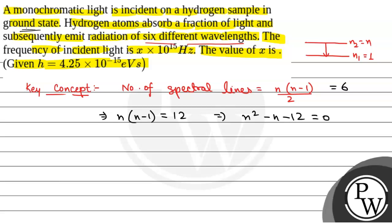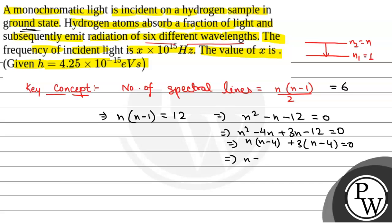Factoring: (n minus 4)(n plus 3) is equal to 0, giving n is equal to 4 and n is equal to minus 3. So we have n is equal to 4; n equal to minus 3 is not acceptable.